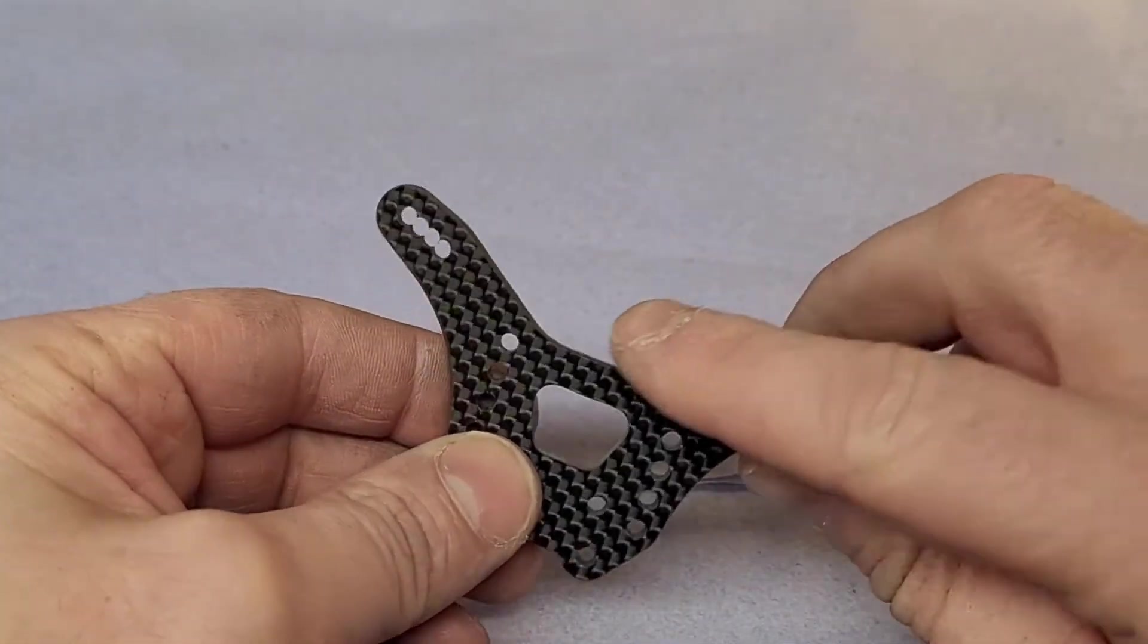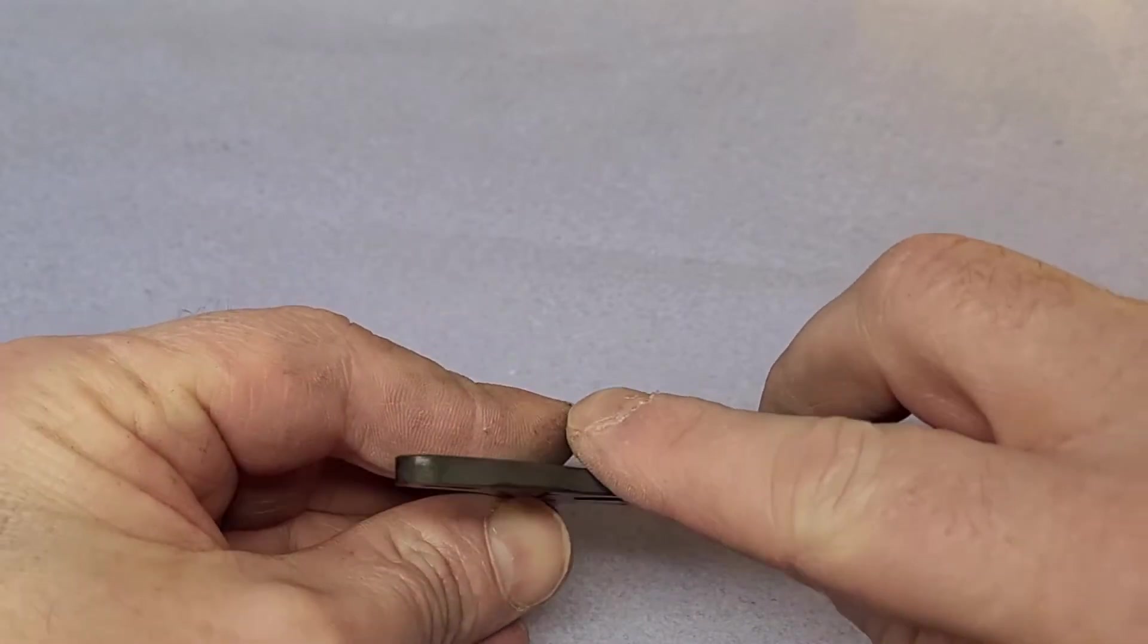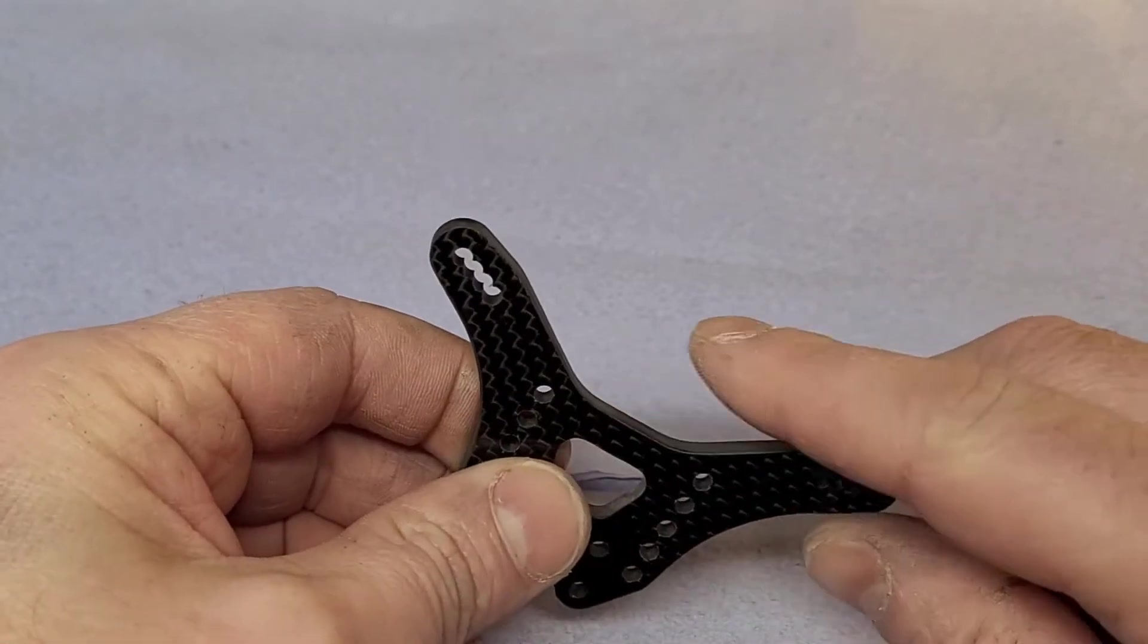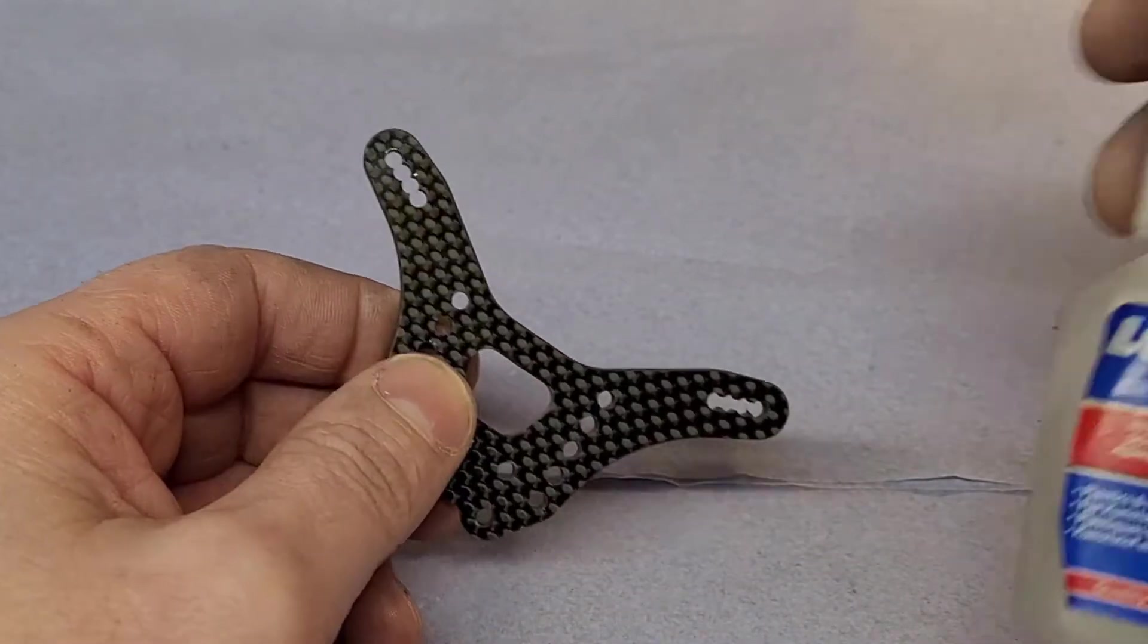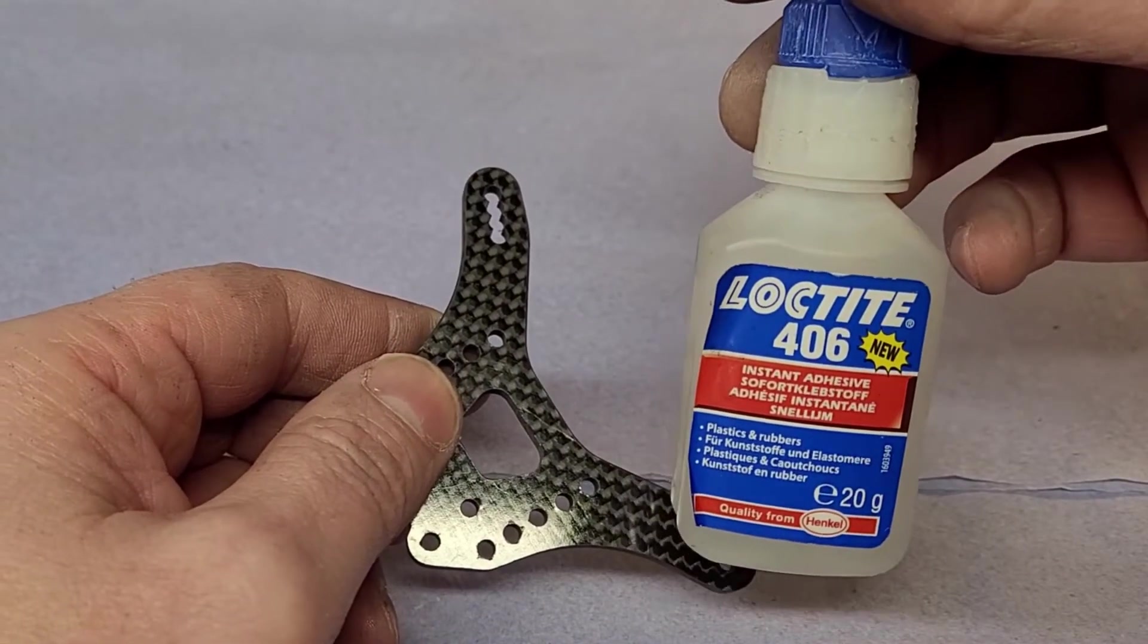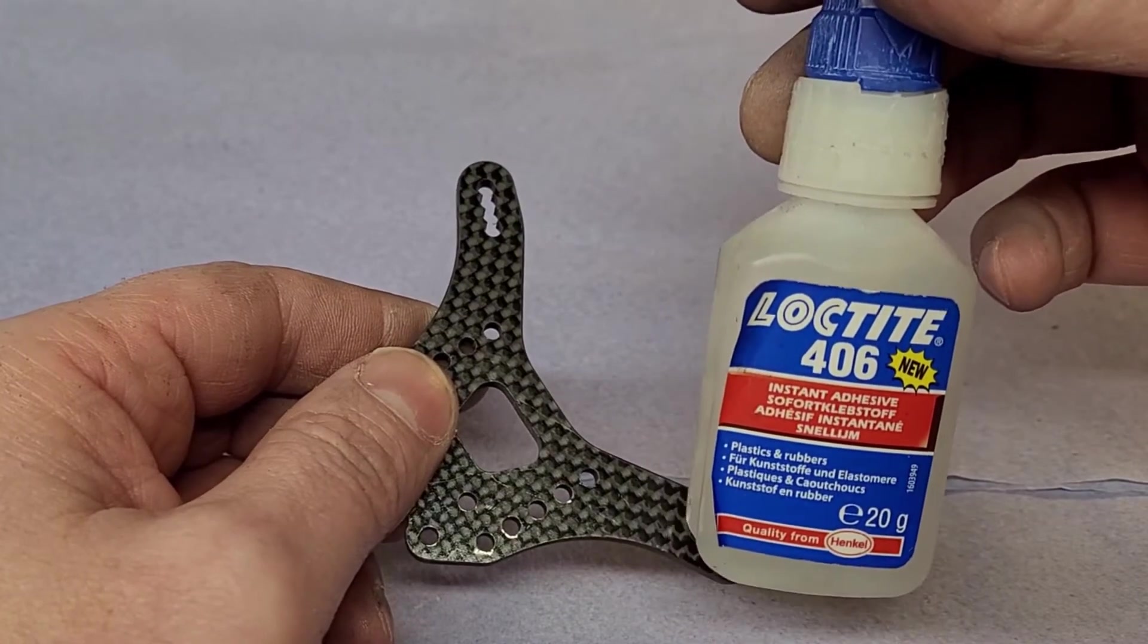So once you have sanded down the edges, you'll feel it's nice and smooth to the touch. Give it a wipe with a cloth so there's no dust residue on there, and then get your medium viscosity glue. This is the one I'm going to use, actually a different one to what I had in the photo originally, just this is what I've got to hand.